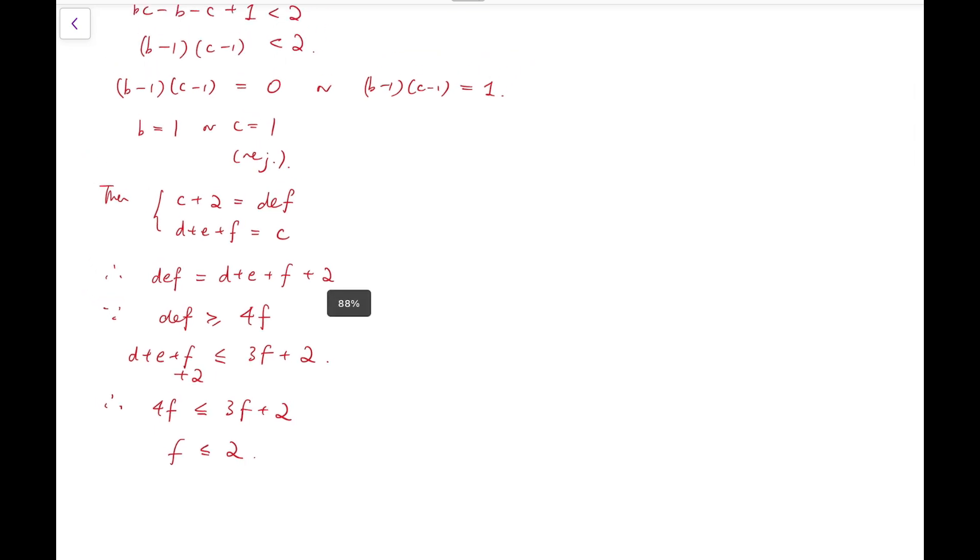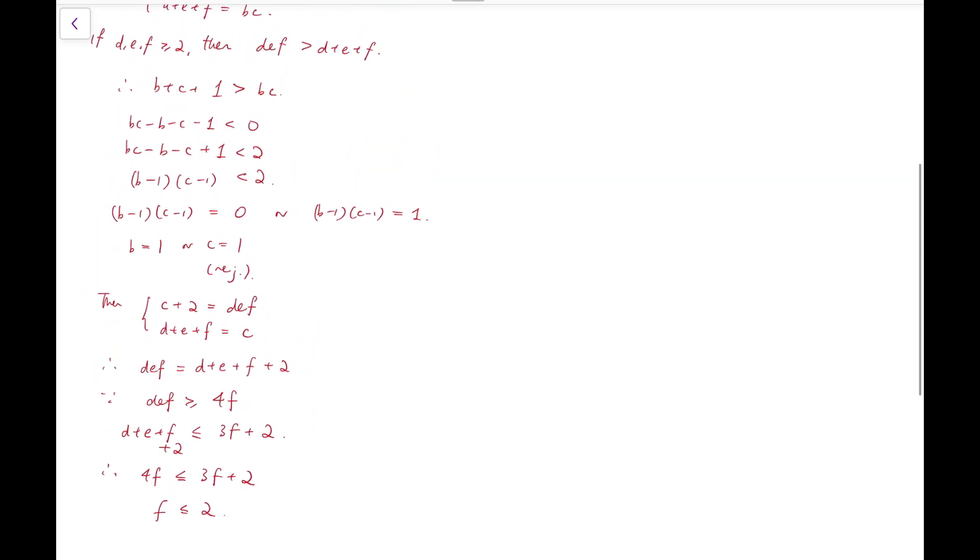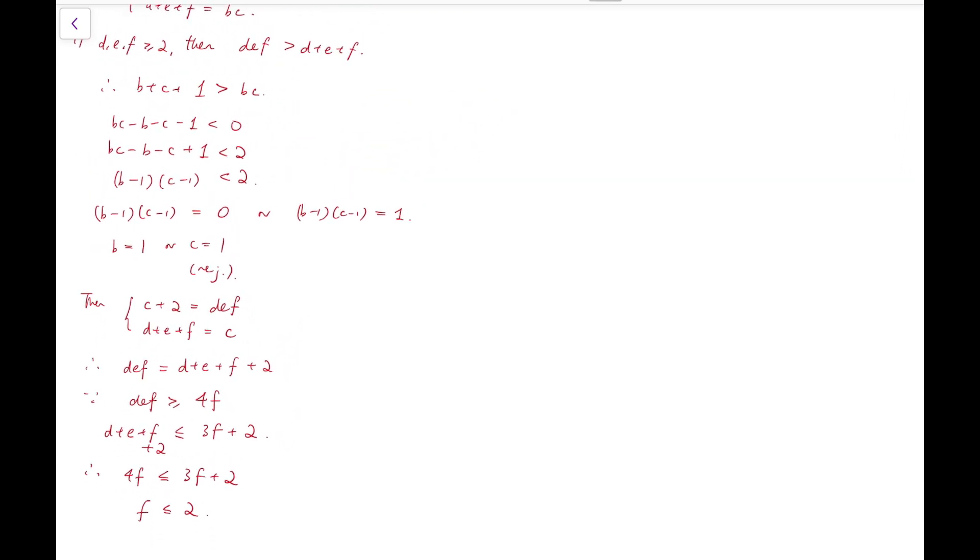However, let's recall that all these work are actually based on the assumption that d, e, f are all at least two. So now, if f is at most two, so we actually have a bound that gives d, e, and f to be all equal to two.